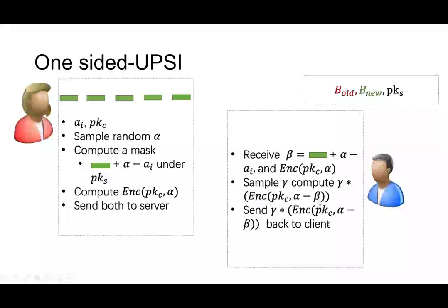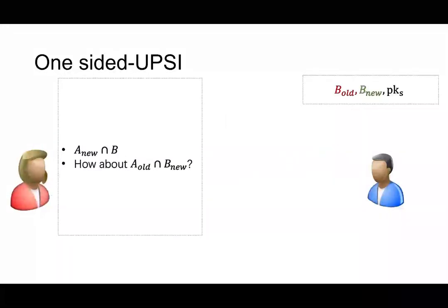So notice that if bin contains a_i, the alpha minus beta should be zero. And gamma is not relevant here. And the server sends this whole thing back to a client. Client will decrypt this thing and see if it is zero. If it is zero, then a_i is in the intersection. So the client can apply this technique to every single a_i and she can get the result, a_new intersected with B.